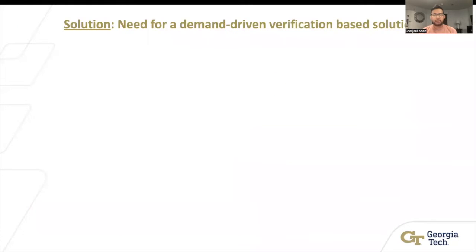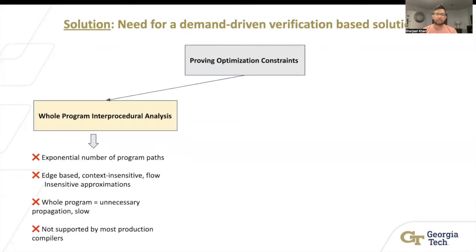So for us to fix these, to actually prove these optimization constraints, we need a demand-driven verification solution. Because if you try some other techniques like whole program interprocedural analysis, there's exponential number of program paths, which make the program slow, with unnecessary propagation. And in addition, it's very eager. So you have to exhaustively prove this constraint at different parts of the program. And it's not supported by most production compilers.